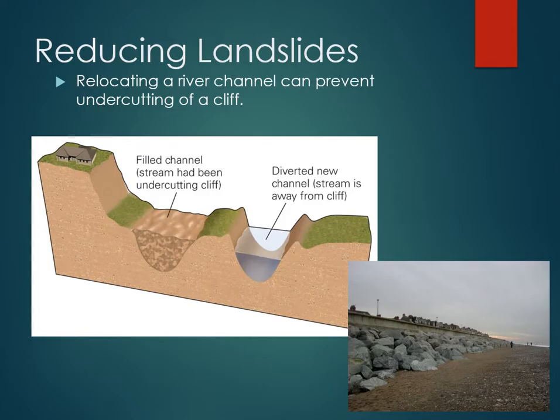If a river has been eroding the base of a cliff, you can simply relocate the river channel to prevent undercutting. You can also place riprap — large boulders — at the bottom of a cliff, whether at the ocean or in a river. Riprap reduces the energy of the water and the waves, keeping beaches, cliffs, and river banks from eroding. So there are lots of things that can be done to try to prevent or at least reduce the risk of landslides.